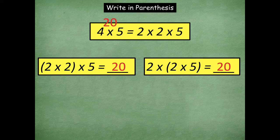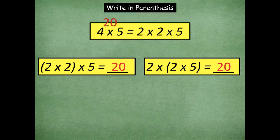Think about it this way: two times two gives you four, and four times five is 20 — solving it the same as the top part. Or you might prefer two times five is 10, and then doubling it by multiplying by two. In these practice problems, it's really up to you how you want to place the parentheses to solve whatever's easiest for you.